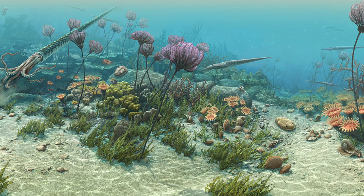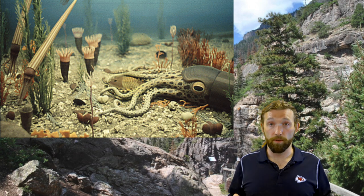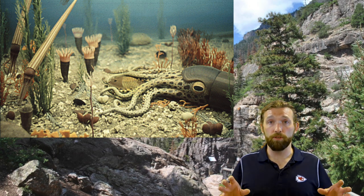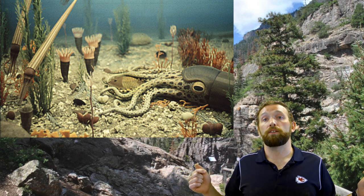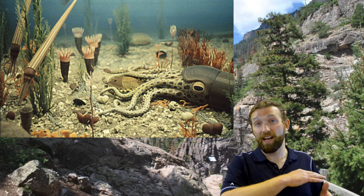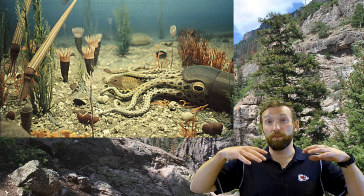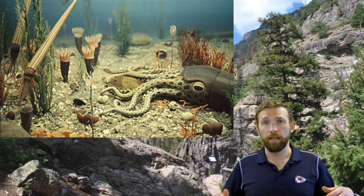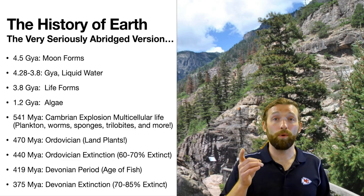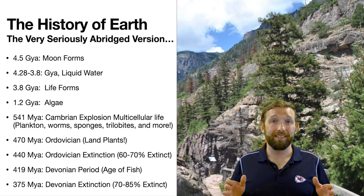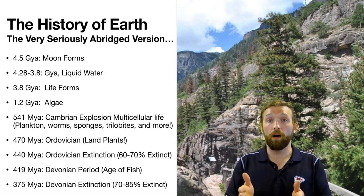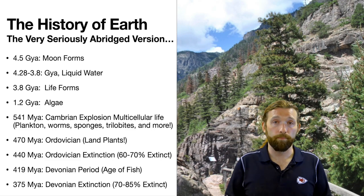At the end of the Ordovician we get a mass extinction. The cause is up for debate — a lot of people think it may be due to global cooling, or the fact that land plants were breaking up new minerals that flooded into the water, causing algal blooms that blocked out the Sun, killing things living at the bottom. We're not a hundred percent sure, but we do know that about 60 to 70 percent of the aquatic species living at the time died at the end of the Ordovician.